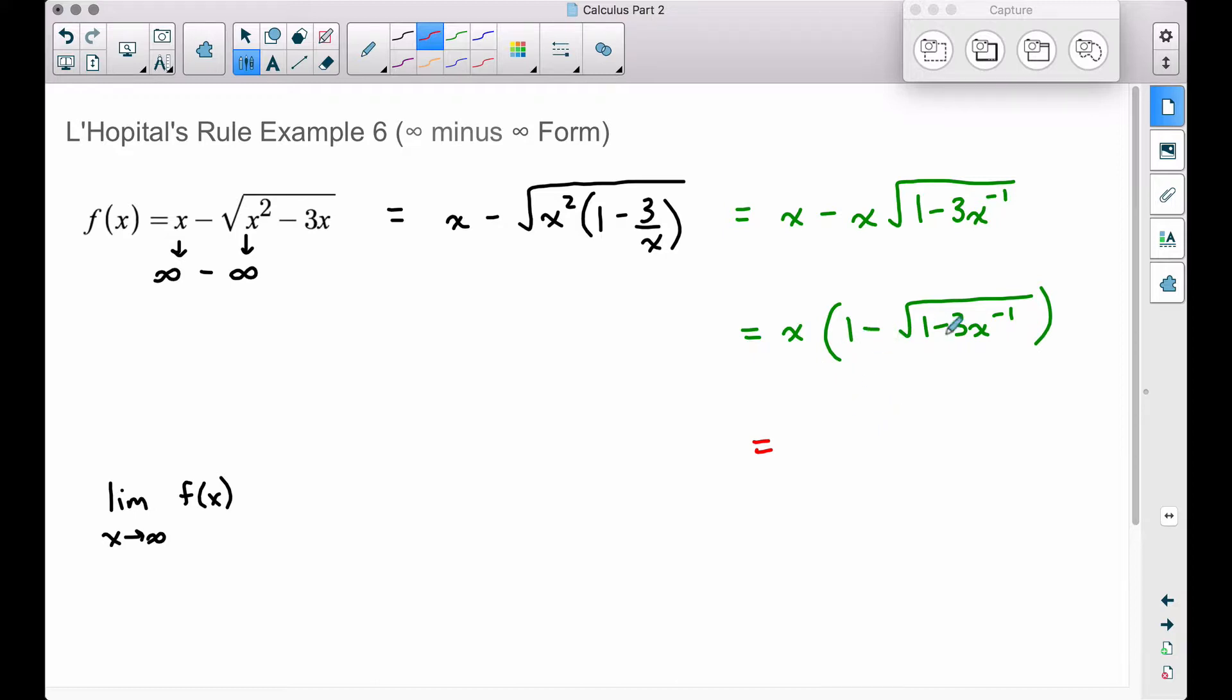Now check out this next step. I'm going to leave this in the numerator, so we have 1 minus the square root of 1 minus 3x to the negative 1 power. And I'm going to shoot this to the bottom by writing x to the negative 1 power. Now we have a fraction, and hopefully this fraction here is going to lead to either infinity over infinity or 0 over 0.